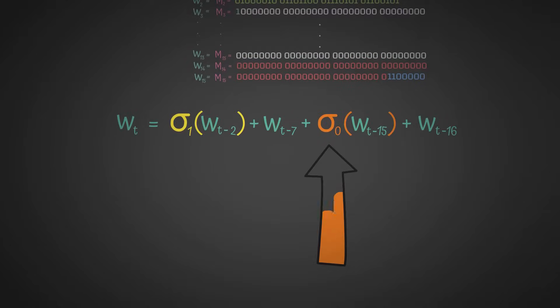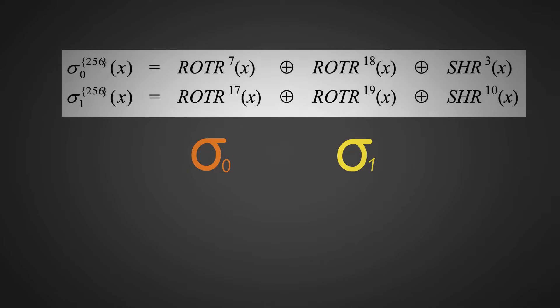This would be pretty easy to understand, except we don't know what these mean. So what is sigma 0 and sigma 1? Well, here it's defined, but it looks very, very messy. Let's give a quick and easy example.